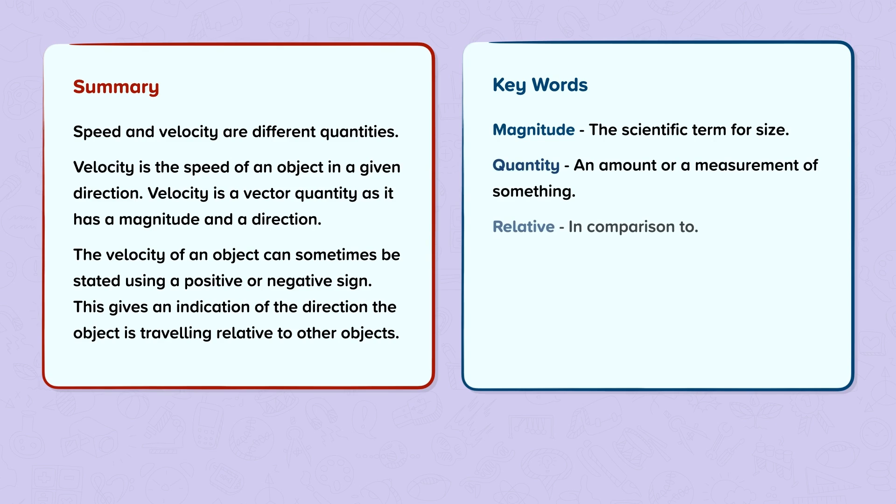Relative - in comparison to. Scalar - a quantity that has a magnitude only. And Vector - a quantity that has a magnitude and a direction.